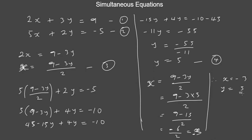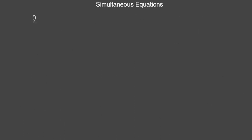Now let's solve this using elimination method. We have 2x plus 3y equals 9 and 5x plus 2y equals minus 5. To eliminate any variable, we need matching coefficients. I'm going to eliminate x. The coefficients of x are 2 and 5, and we need to find the lowest common multiple, which is 10.